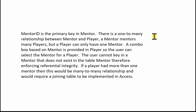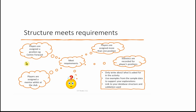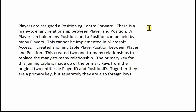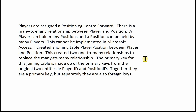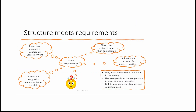If a player had more than one mentor, this would be a many-to-many relationship requiring a joining table in Access. The next paragraph covers players being assigned a position, for example centre forward. There is a many-to-many relationship between player and position — a player can hold many positions and a position can be held by many players. This cannot be directly implemented in Microsoft Access, so I created a joining table, player position, between player and position. This created two one-to-many relationships. The primary key for this joining table is made up of player ID and position ID — together they form a composite primary key, but separately they are also foreign keys.